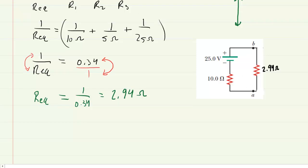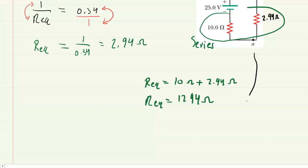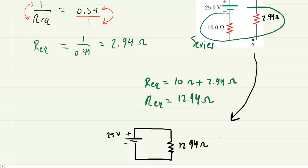We have one more step. The remaining two resistors are connected in series. Some people might think they're in parallel because of how they're drawn, but drawing a pathway from the 10 ohm resistor to the 2.94 ohm resistor, you can draw one continuous line without reaching a junction. With no junctions, these two are in series, so we add them: 10 ohms plus 2.94 ohms equals 12.94 ohms. Redrawing gives us a single equivalent resistor of 12.94 ohms with our 25 volt battery.